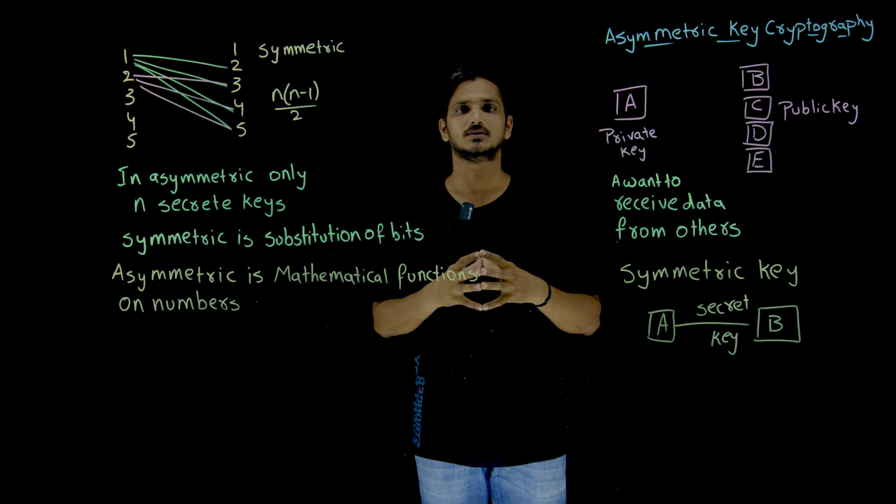One more difference: in symmetric key cryptography, we perform substitution and permutation of bits. In asymmetric key cryptography, we don't do permutations — instead we work with mathematical functions on numbers. We convert our characters into numbers and apply mathematical functions during encryption and decryption. These are the basic things we need to understand for asymmetric key cryptography and symmetric key cryptography.